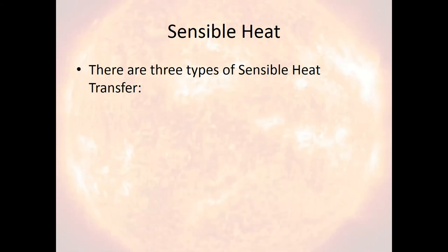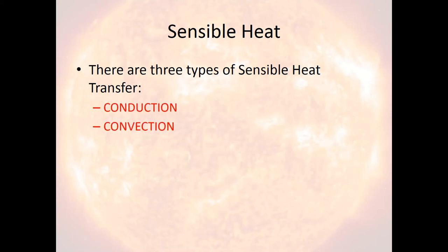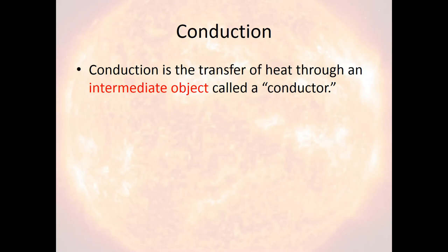There are three ways that sensible heat travels — three types of transfer. They are conduction, convection, and radiation. We're going to talk about conduction and convection in depth today. The next two videos will cover radiation more in depth. So without further ado, let's talk about conduction.